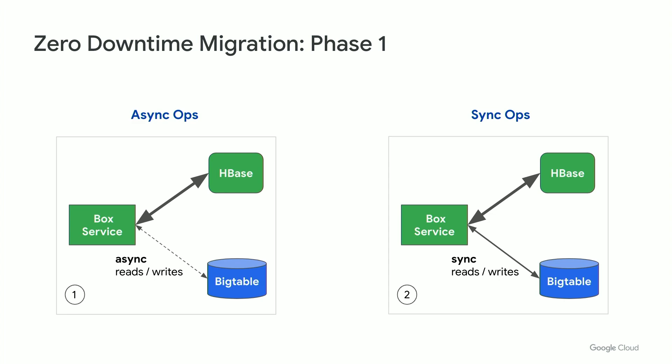First, we perform reads and writes to both Bigtable and HBase. The Bigtable reads and writes here are asynchronous and best effort. This allows us to monitor Bigtable latencies and tune its settings without impacting any user traffic. Second, after we stabilize the Bigtable metrics, we switch to synchronous Bigtable reads and writes. This effectively brings Bigtable into the critical path of user traffic and allows us to achieve consistency between Bigtable and HBase for all the data.